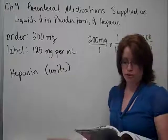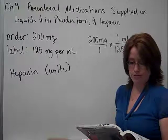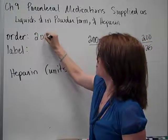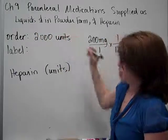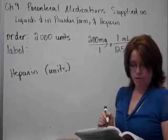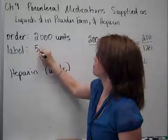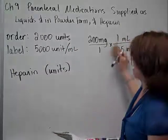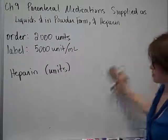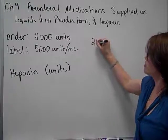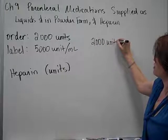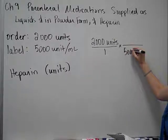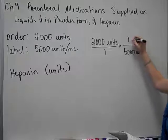It says the prescriber ordered heparin 2,000 units subcutaneously every 12 hours. So, I've got an order of 2,000 units, and it says that the label on the multi-dose vial reads 5,000 units per milliliter. And, you're going to be asked, how many milliliters should you administer to your patient? Well, this is pretty straightforward. Start with the doctor's order, and just put the word units. And then, use the concentration. 5,000 units and 1 milliliter.